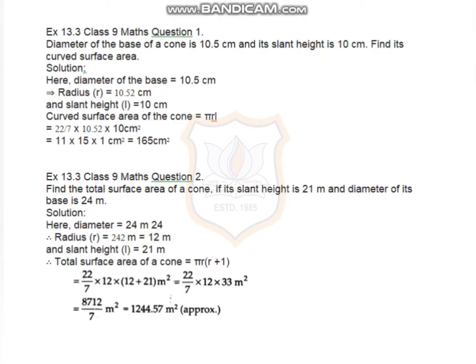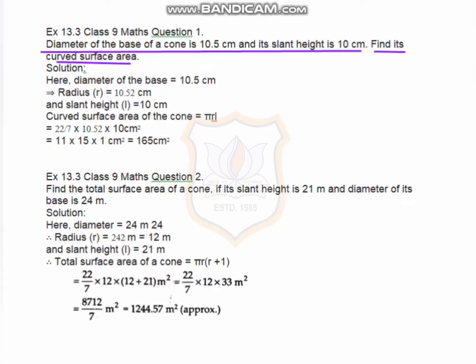Hello students, today I will start Exercise 13.3. The diameter of the base of a cone is equal to 10.5 centimeters and its slant height is 10 centimeters, and we have to find the curved surface area of the cone. In the first video I have given you the formula of cone and all the 3D objects.